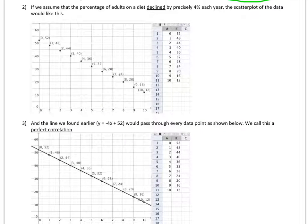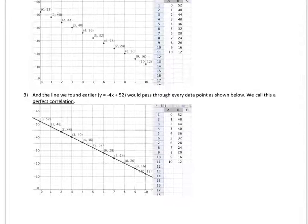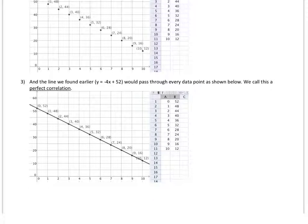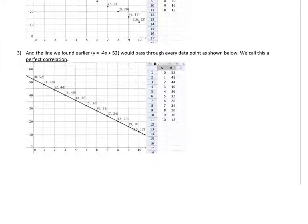If we assume that the percentage of adults on a diet declined by precisely 4% each year, then the scatter plot of the data would look like this, right? So my percentages would go 52, 48, 44, 40, 36. They'd go down by exactly 4% every year. And all of my points would lie perfectly on a straight line, the line we found, y equals negative 4x plus 52. Every point of data that I had would go right through, that line would go right through it.